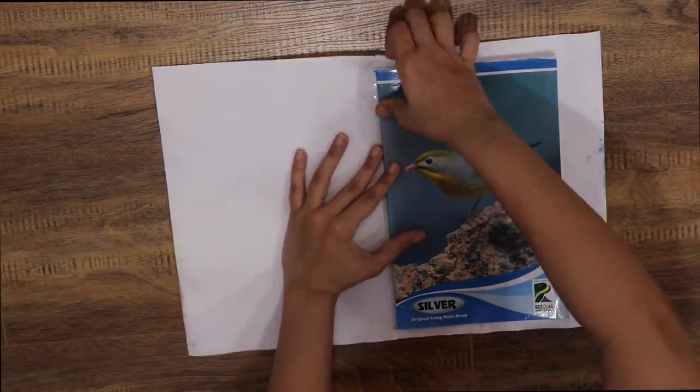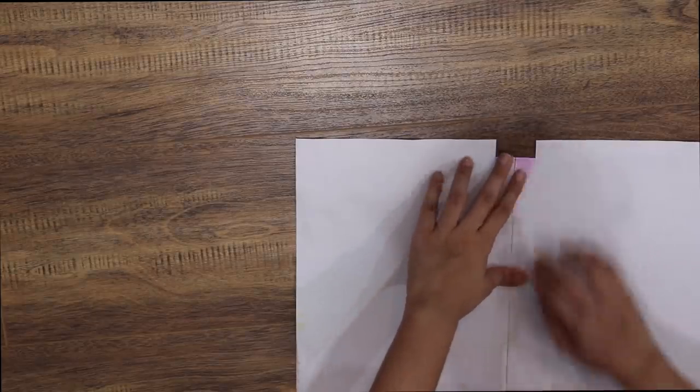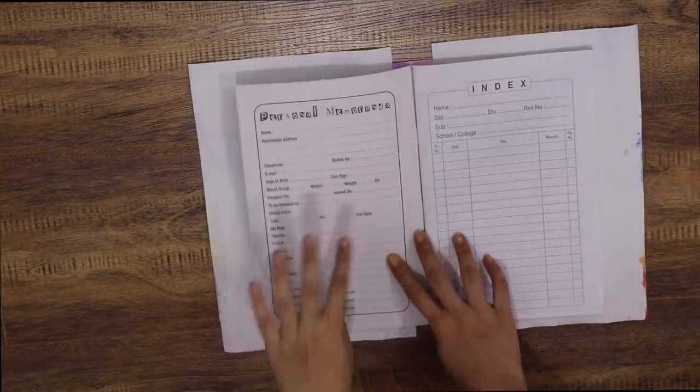And then we are going to cover our notebook just like any other notebook. Side mein se marking karna hai ki notebook kitna bada hai, flaps cut karne hai, and then flaps ko andar ke side heech ki us ko tape lagana hai. Then we open the cover and we fold in the sides.